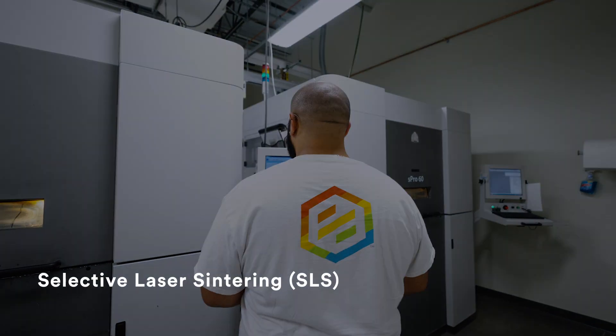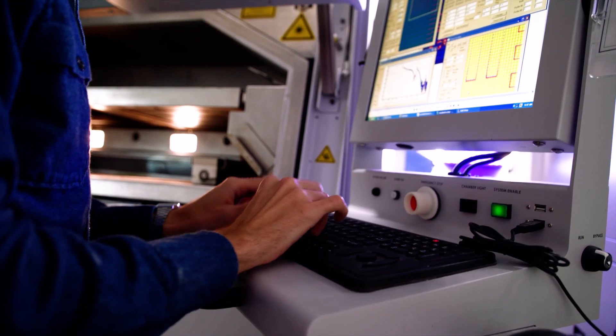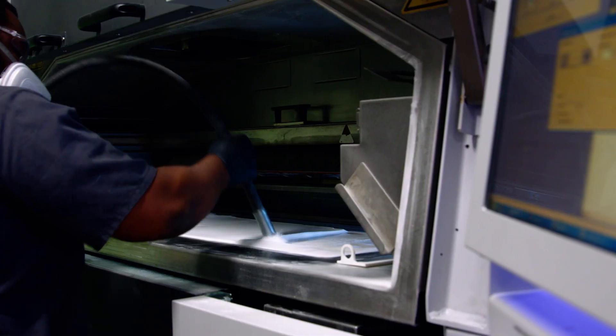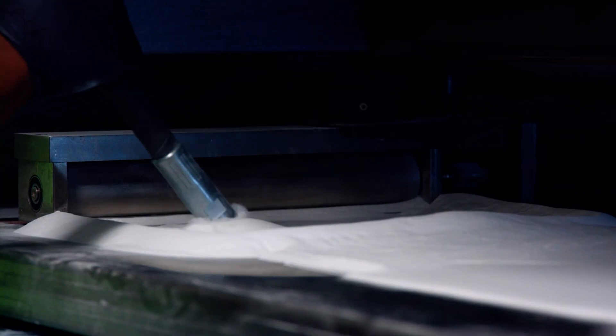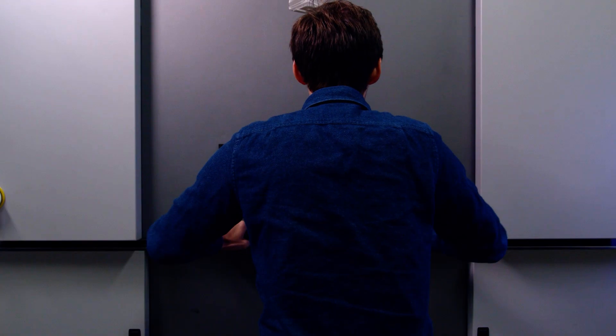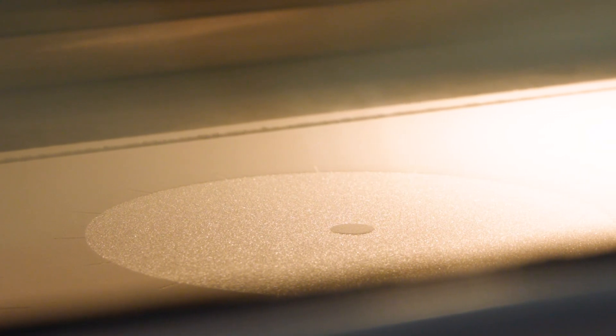Our selective laser sintering area contains several 3D Systems S-Pro 140 and S-Pro 60 machines. These are used to build parts from engineering-grade nylon powder. This process also supports TPU for durable elastomeric components like hoses and seals.